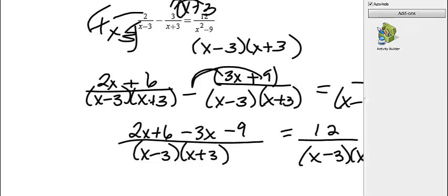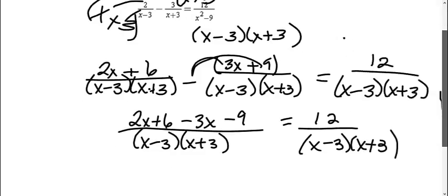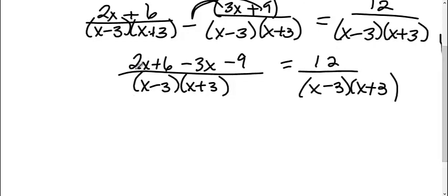Okay, now that my bottoms are the same, I can set my tops equal to each other. So I'm going to combine this. A 2x and a negative 3x is a negative 1x. A 6 and a negative 9 is a negative 3.